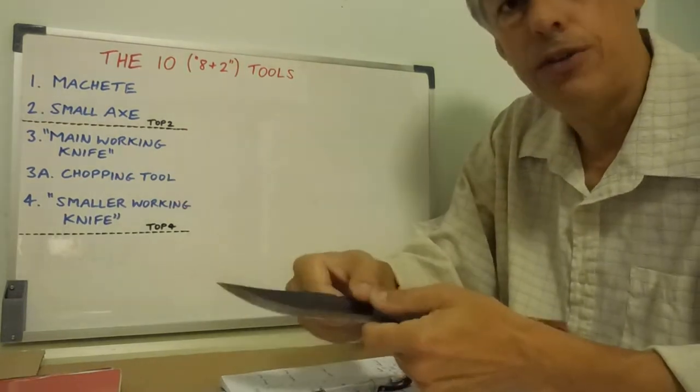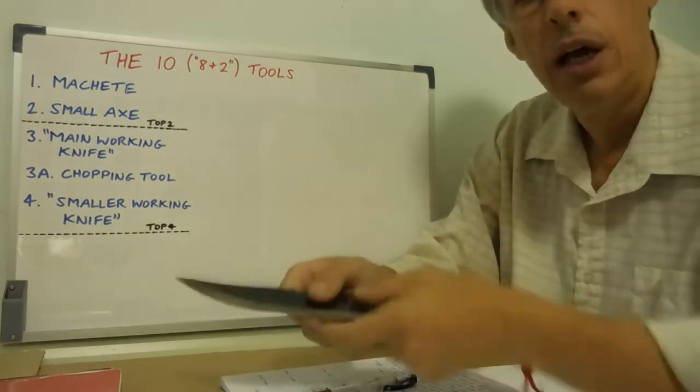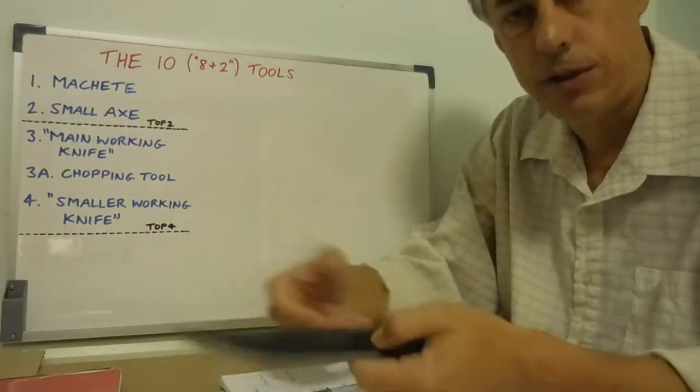And your main working knife does your medium work. That's basically batoning, or your batoning, fuel for a fire, and so forth.